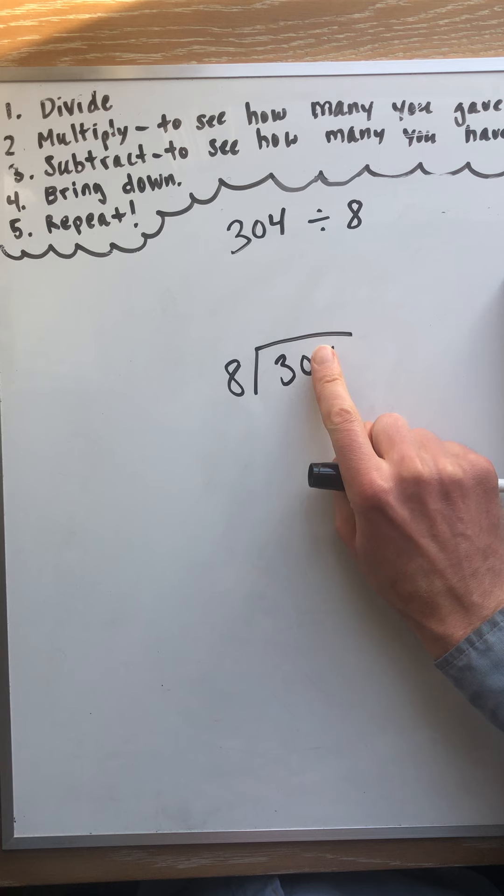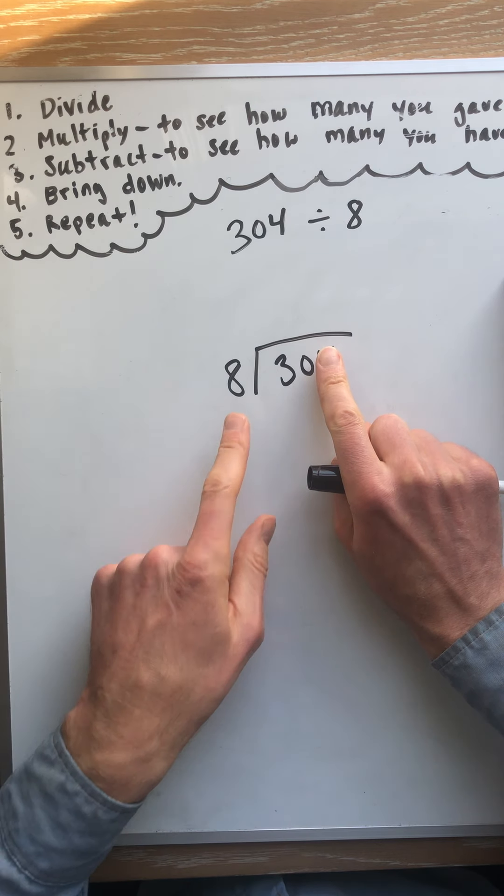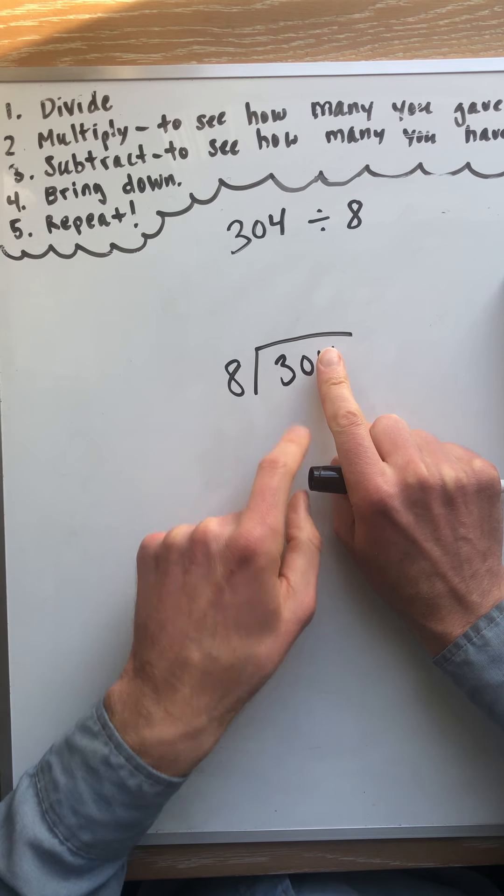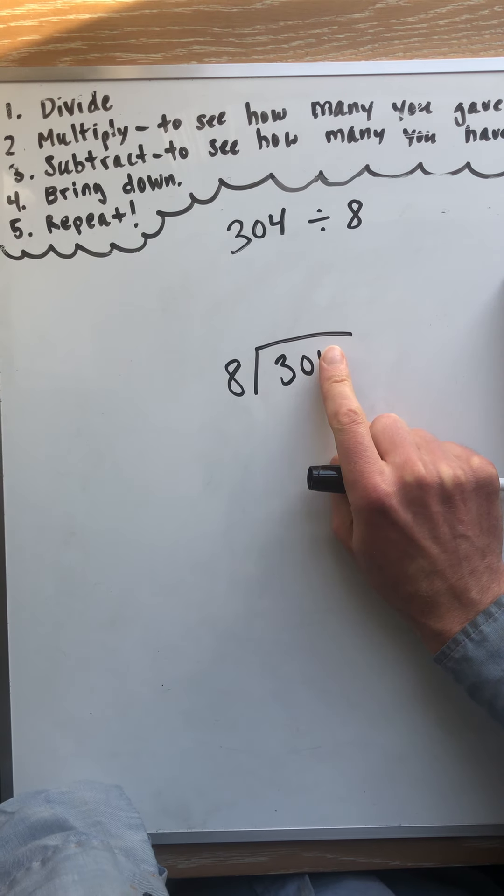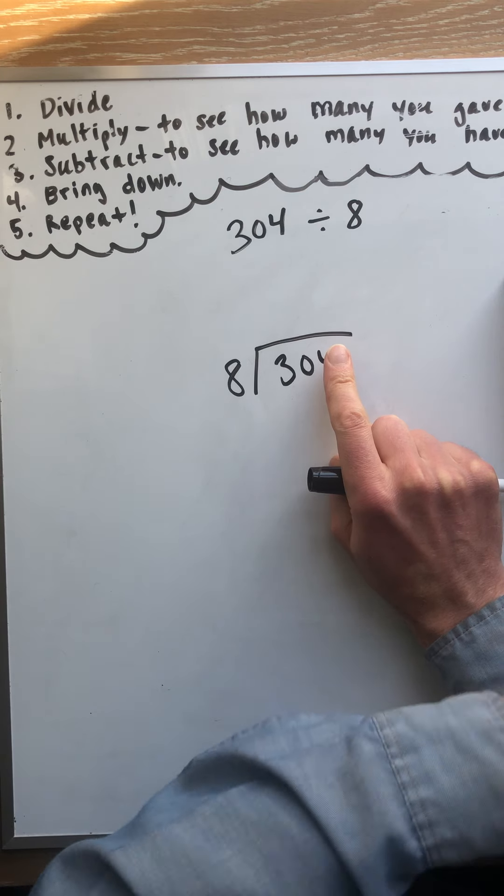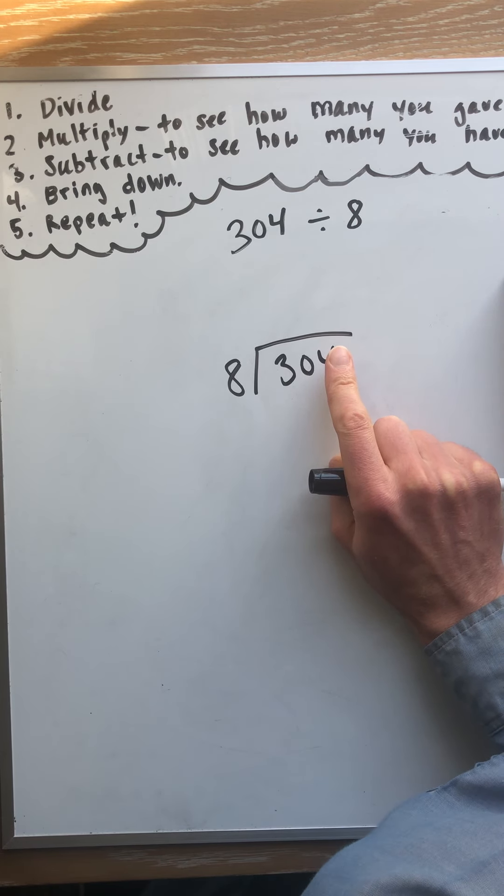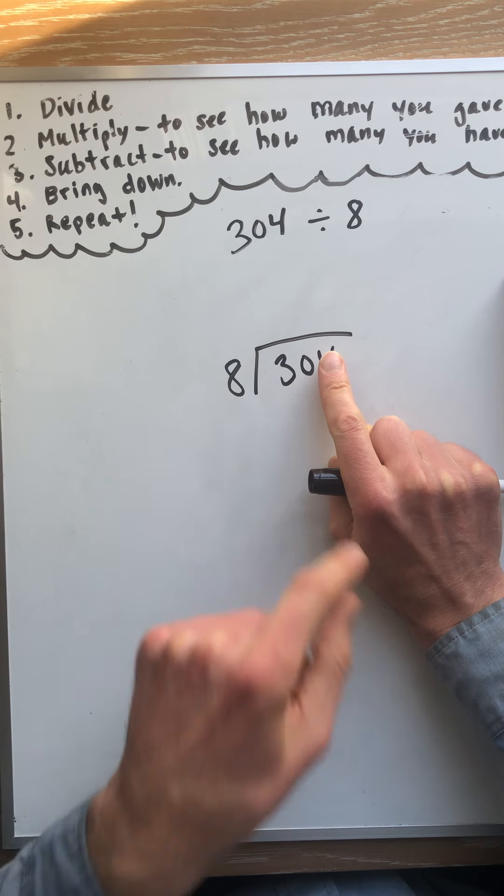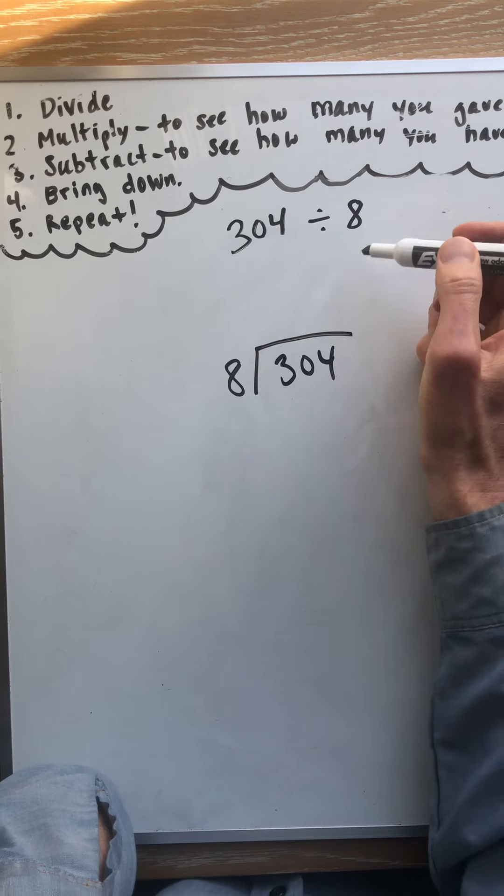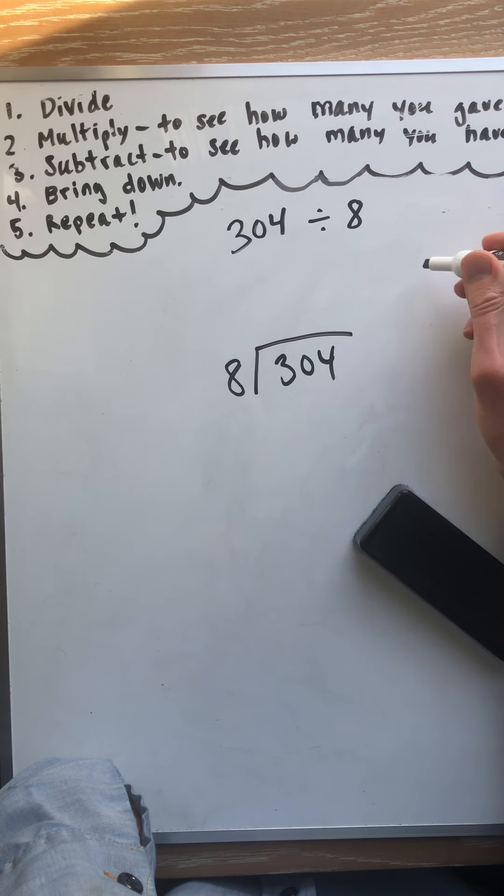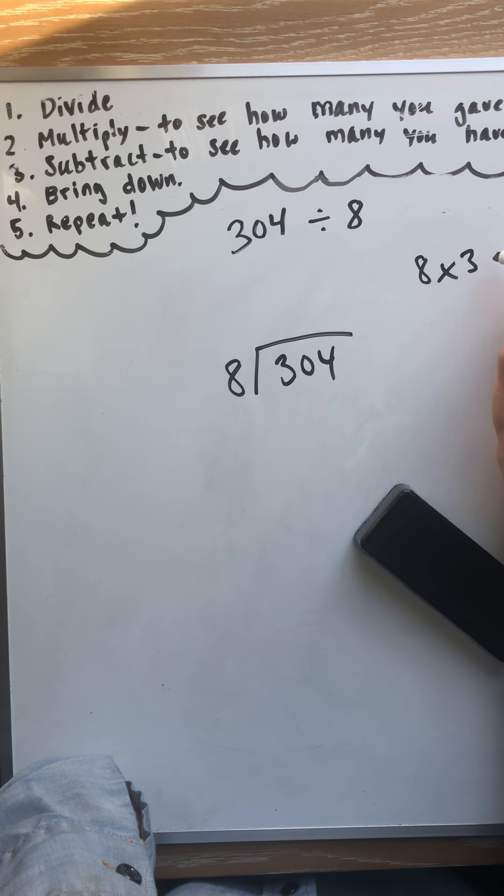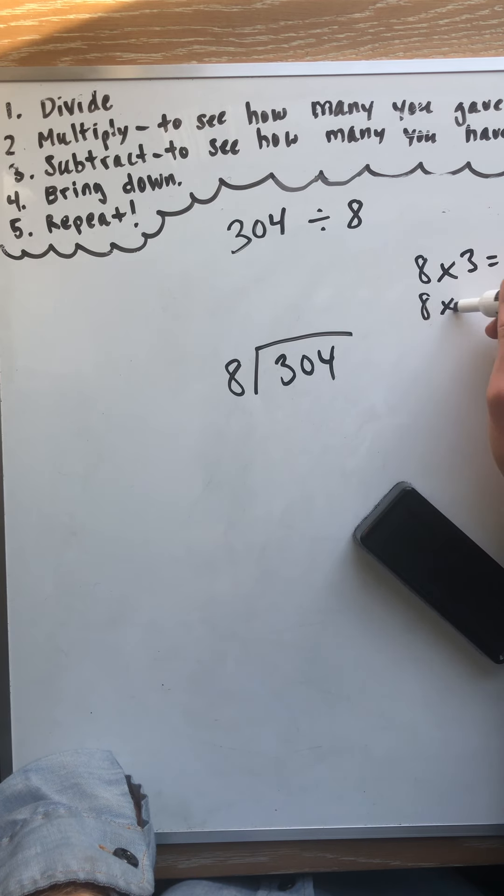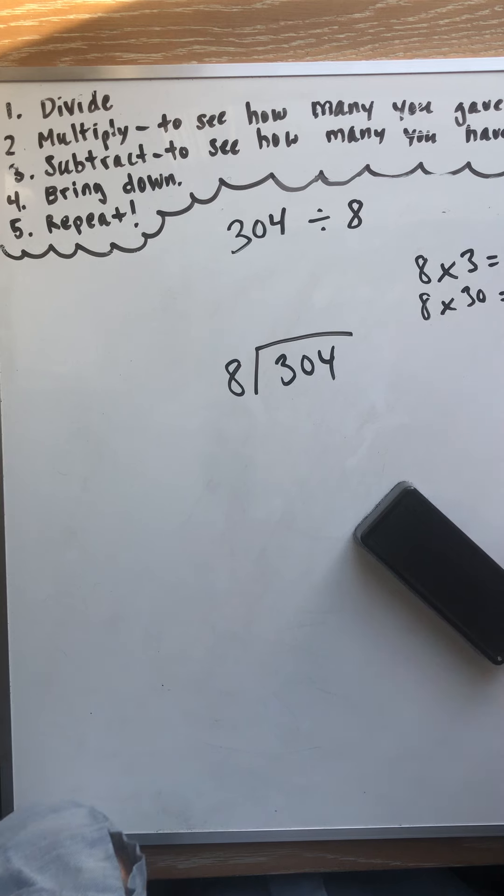Well, let's see, 3, 30. I'm going to guess, how many times does 8 go into 30? 8 times what equals about 30? Well, 8 times, let's see, 8 times 3 is 24. Which means 8 times 30 equals 240. So it'll be at least 30.